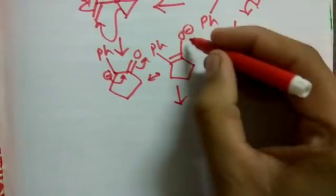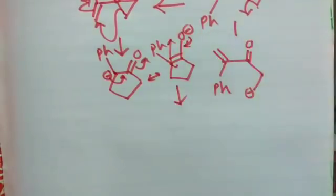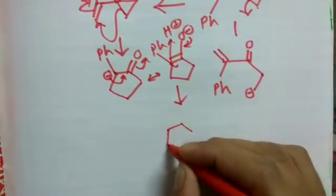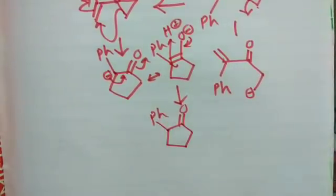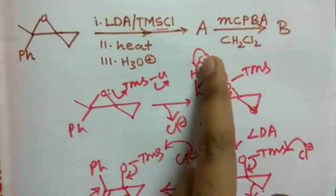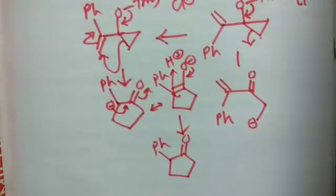The third condition you can see is protonation. Protonation will give you this. So this will be Product A—the first product.